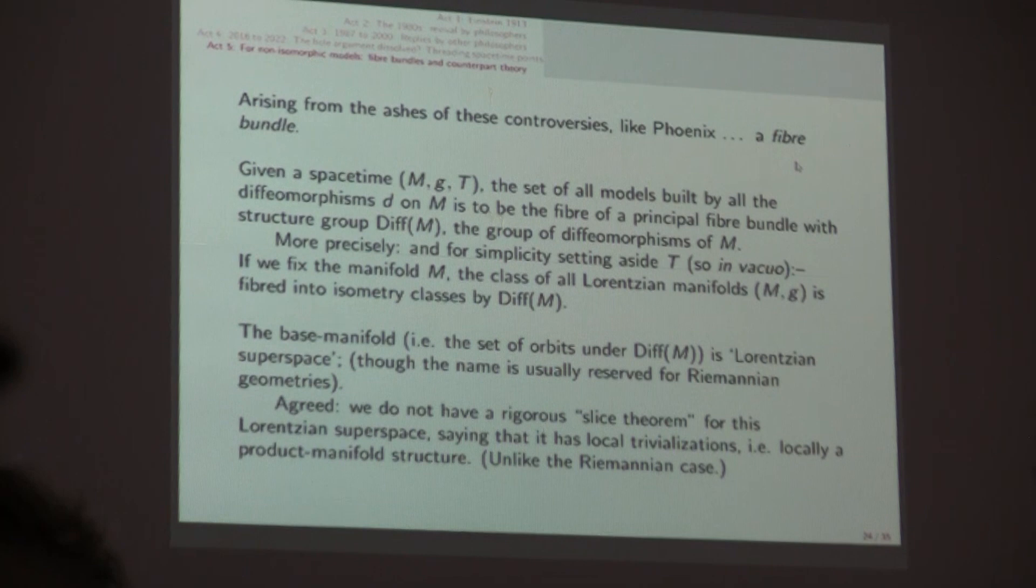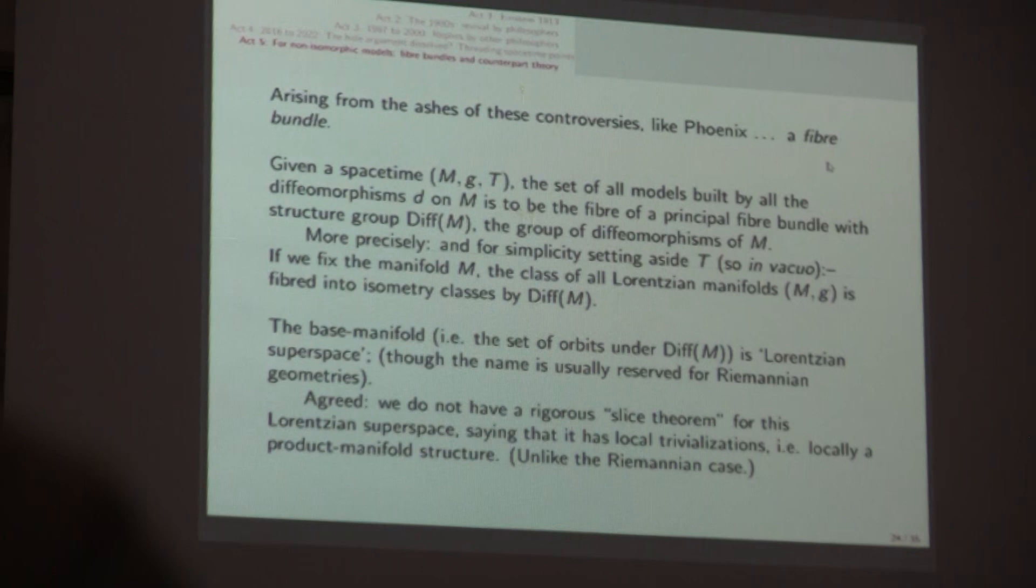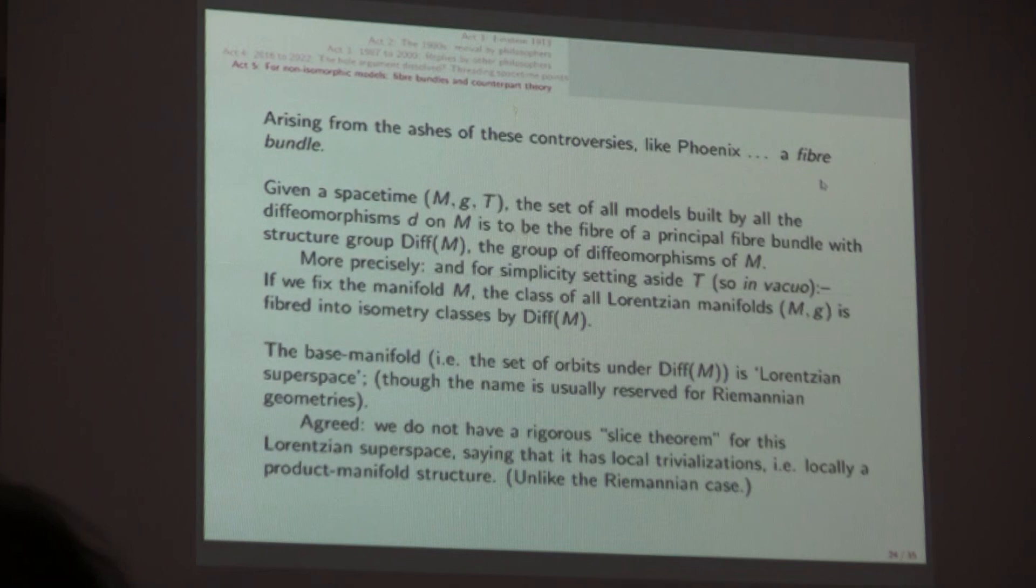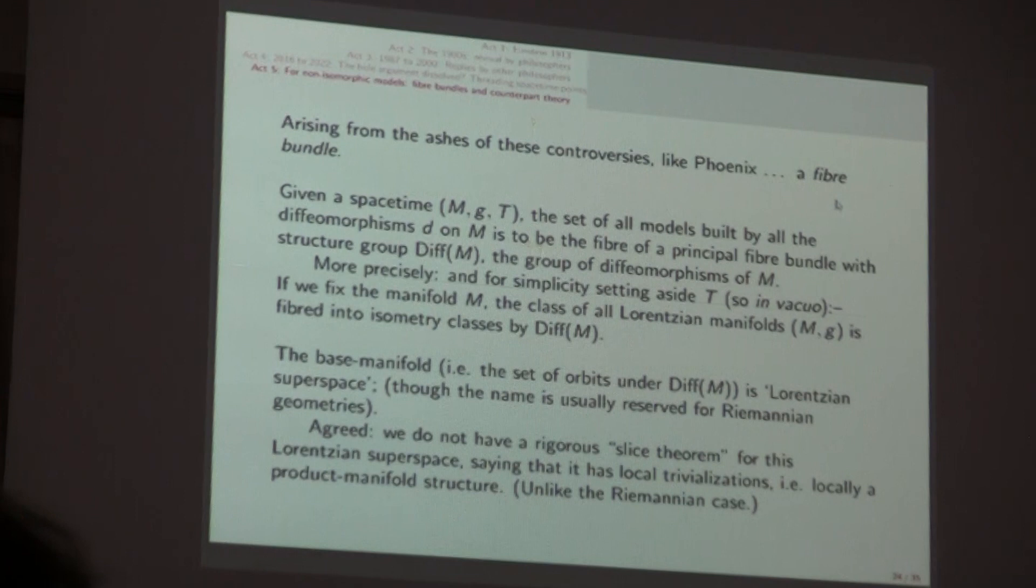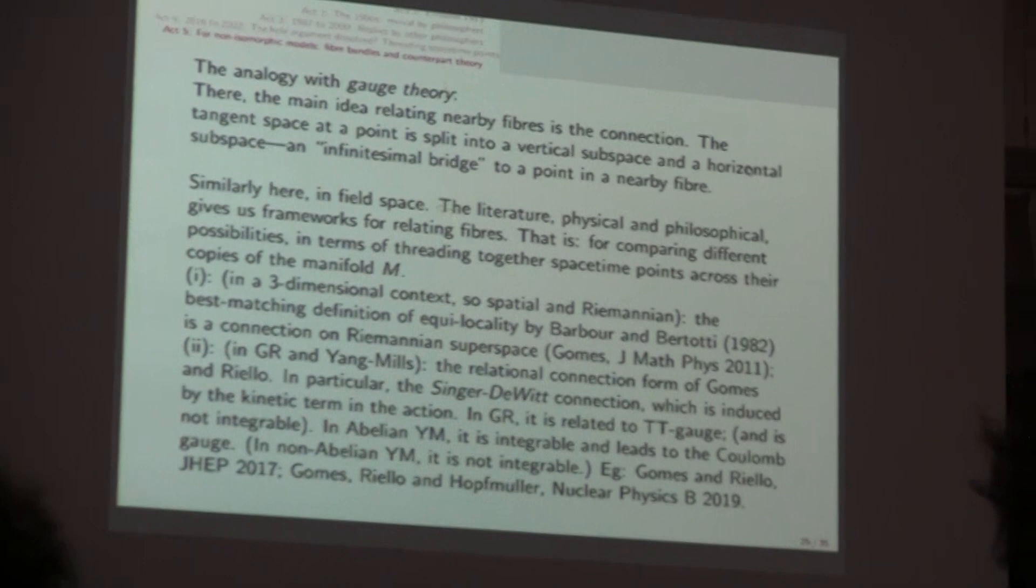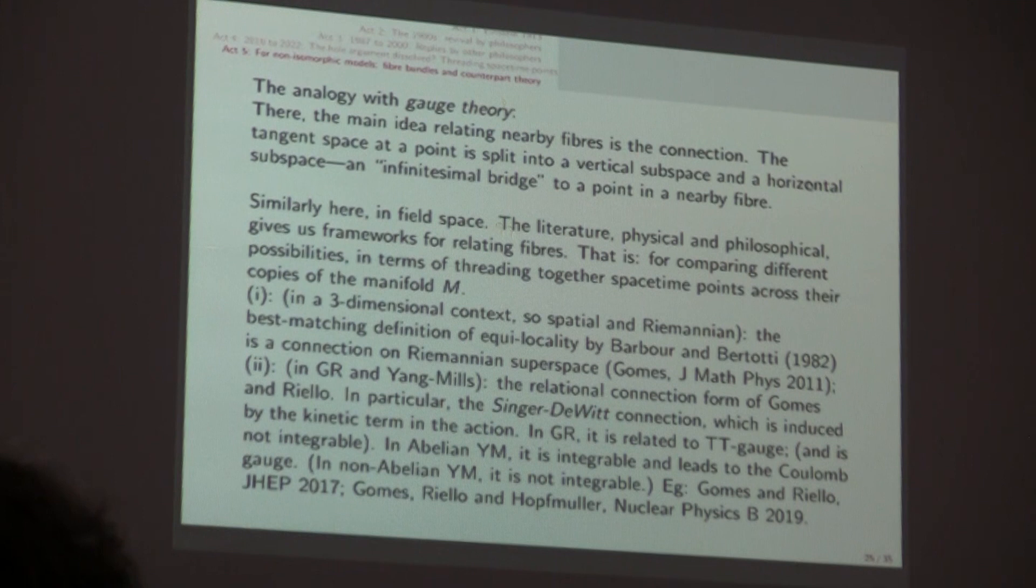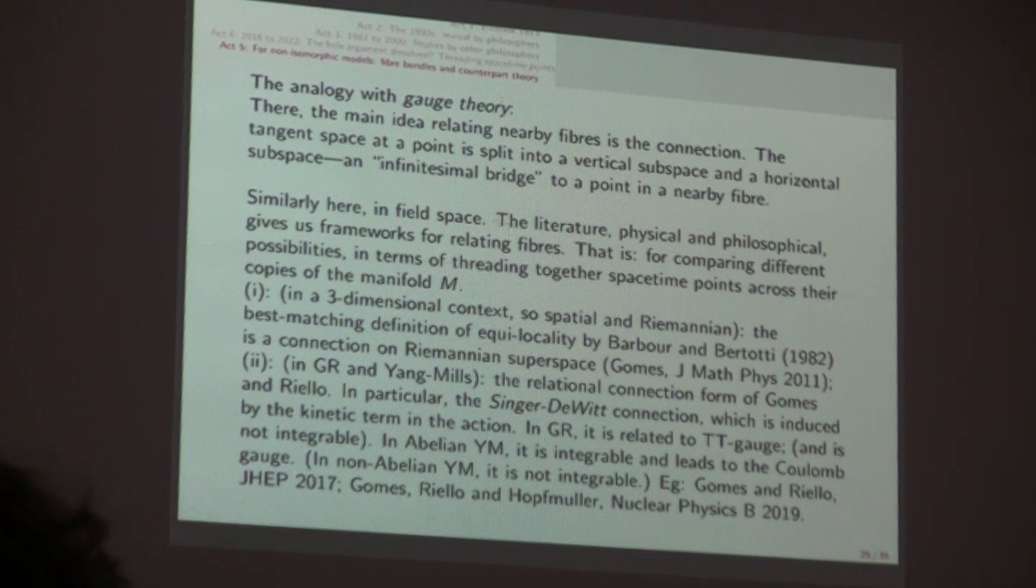And the base manifold, which is the set of orbits under diff, is we could call it Lorentzian superspace, or for short superspace, but as many of you will know, superspace is normally used for Riemannian geometries. Sadly, famously, notoriously, we don't have a real slice theorem for Lorentzian superspace. The only paper I know on this is Isenberg and Marsden 1982, where a certain restricted slice theorem is given. We won't get into that, but the framework that I'm about to describe, the last two slides, is vivid and helpful, even without the full rigour of a slice theorem.